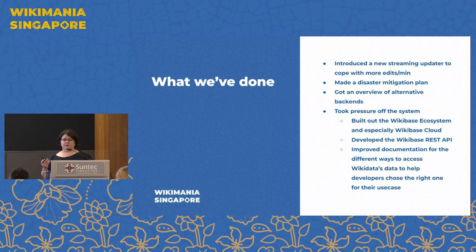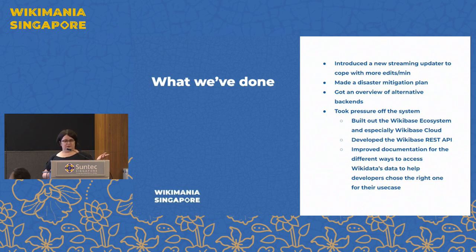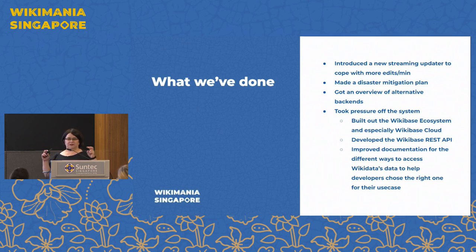We have taken a lot of pressure off the system by moving things elsewhere. We've built out the Wikibase ecosystem so that people can move data that's maybe too specialized or too niche for Wikidata — data that doesn't fit the notability guidelines — to their own Wikibase instance or on Wikibase Cloud, the hosted Wikibase as a service provided from Wikimedia. We've also developed the Wikibase REST API to let people do operations that don't need the whole query graph — requests we can more easily optimize and cache. So if you're not actually querying but just accessing individual data points, do not use the Query Service — use the REST API.